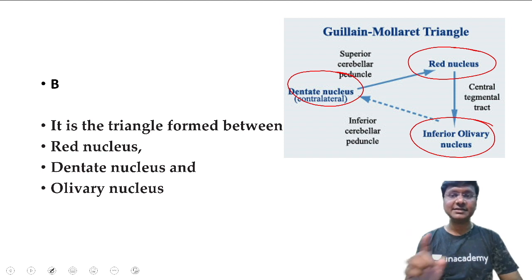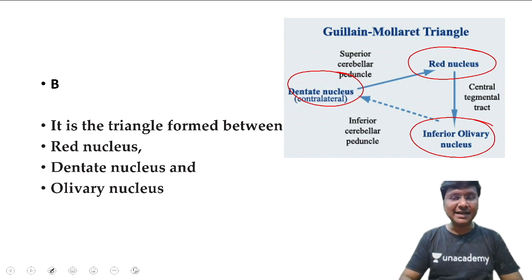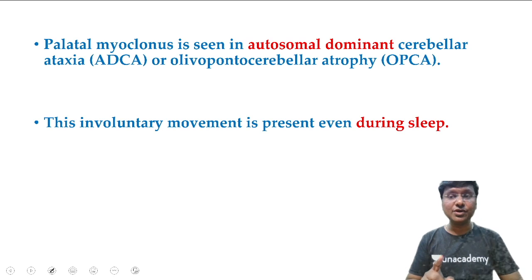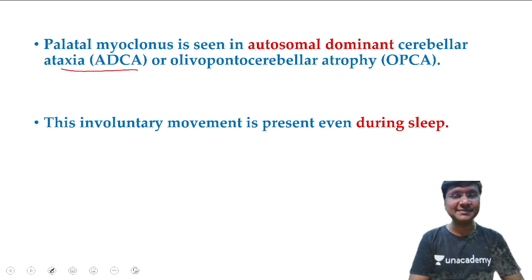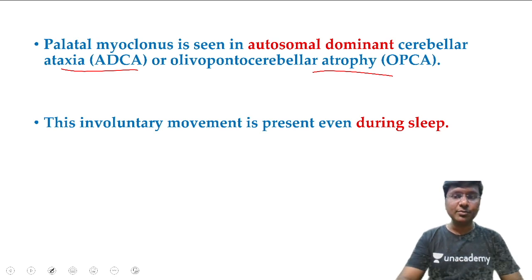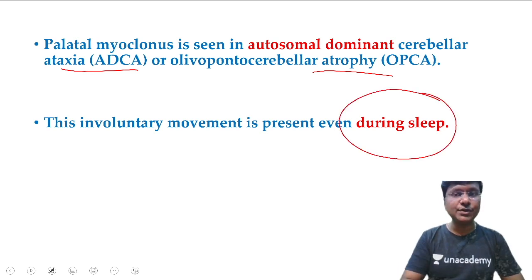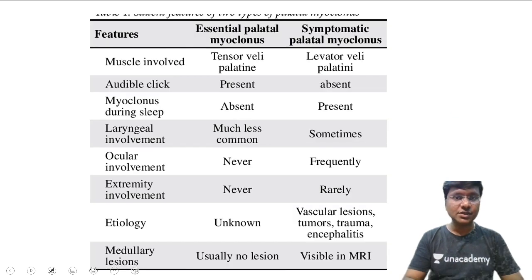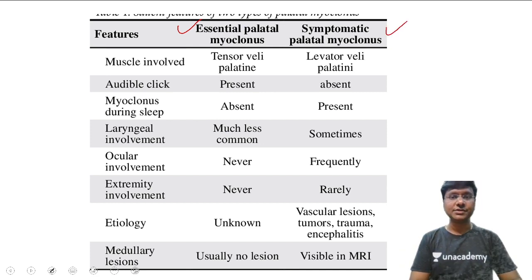The etiologies of palatal myoclonus include autosomal dominant cerebellar ataxia or olivopontocerebellar atrophy. It is an involuntary movement that can be present even during sleep. There are two forms: essential palatal myoclonus and symptomatic palatal myoclonus.